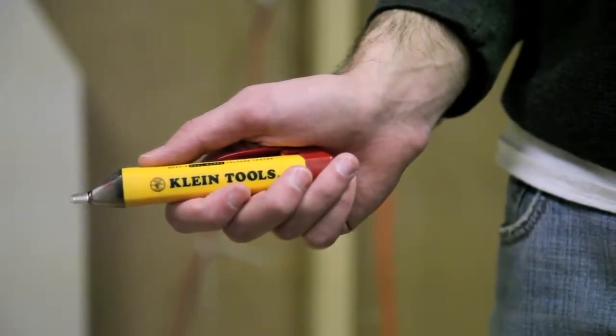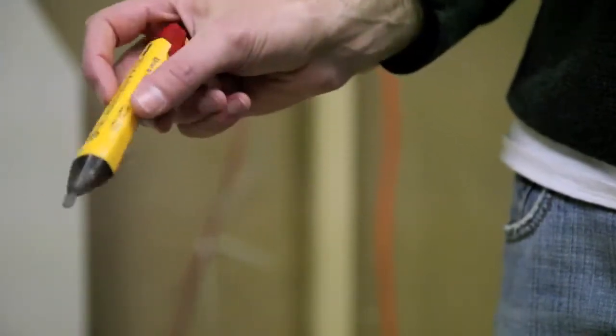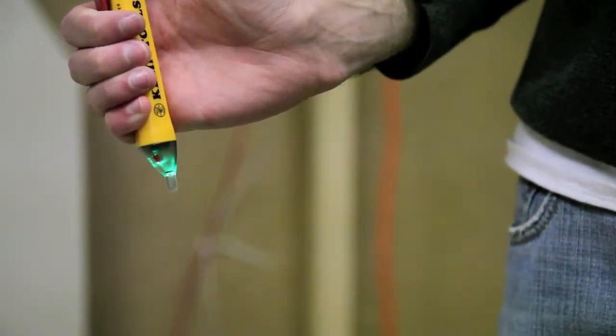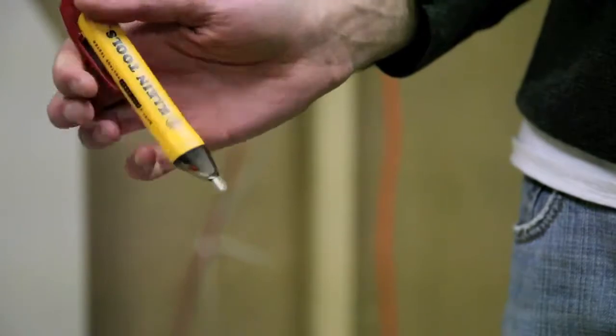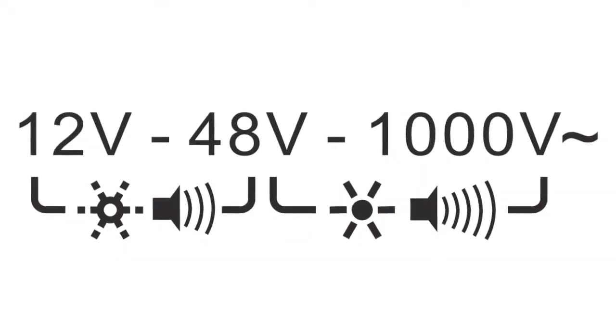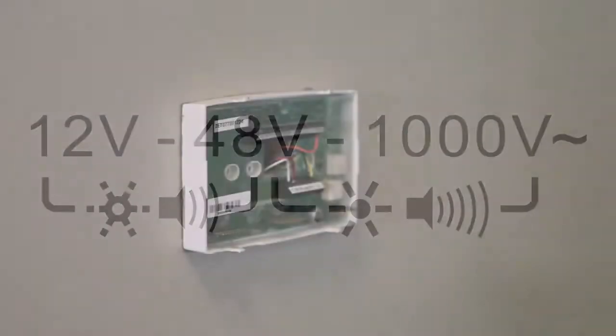Klein Tools is proud to introduce the NCVT2 Dual Range Non-Contact Voltage Tester. The NCVT2 combines all the great features of the NCVT1 Non-Contact Voltage Tester, plus automatic detection and indication of the 12-48 AC low voltage range.